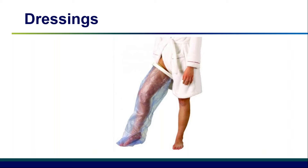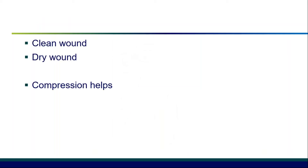In terms of dressings, some basic rules for lower legs: we've got a clean wound most times when doing excisions, and a dry wound because we've closed it side to side. With a clean, dry wound, a simple occlusive dressing is all that should be required. We often add steristrips to help support the wound, because there's a degree of tension on the lower leg. Steristrips widen the area of tension so not all the pull is on the actual suture points.